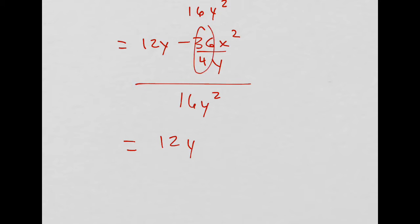12y, 36 divided by 4 is 9, so minus 9x squared over y, divided by 16y squared.